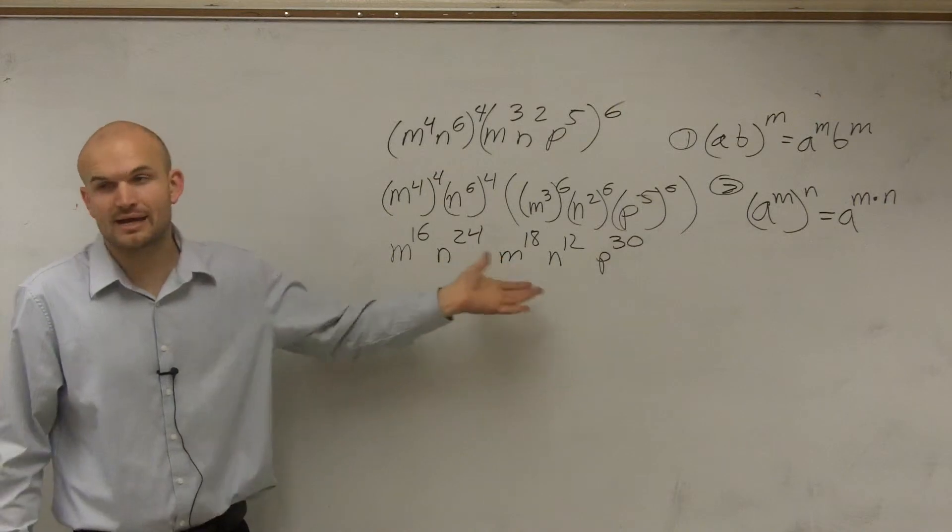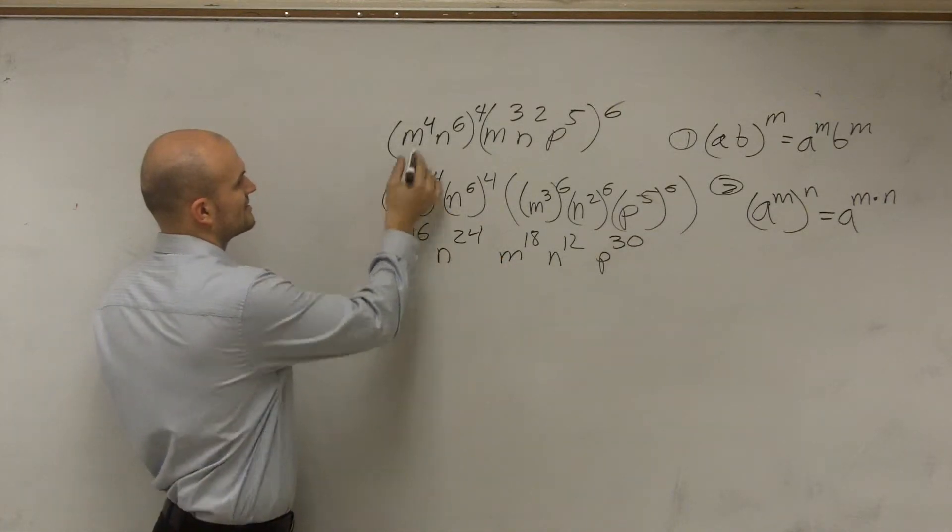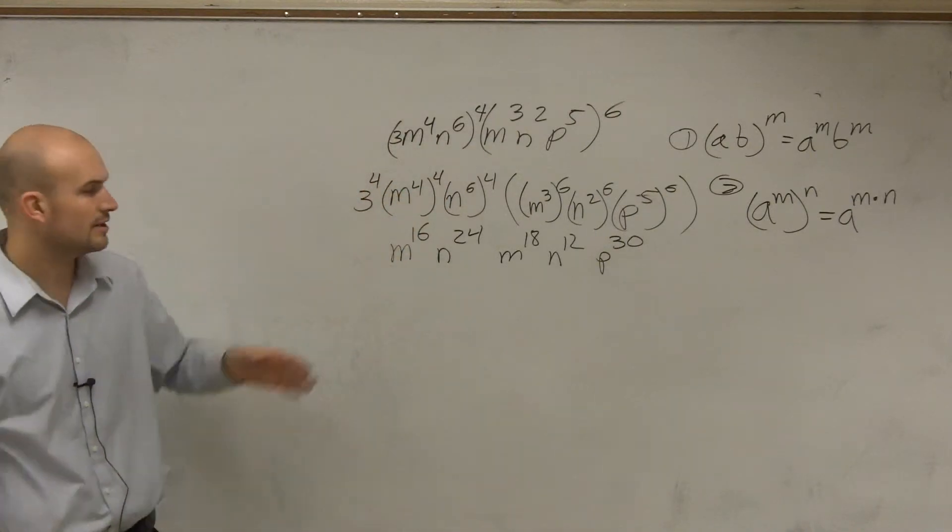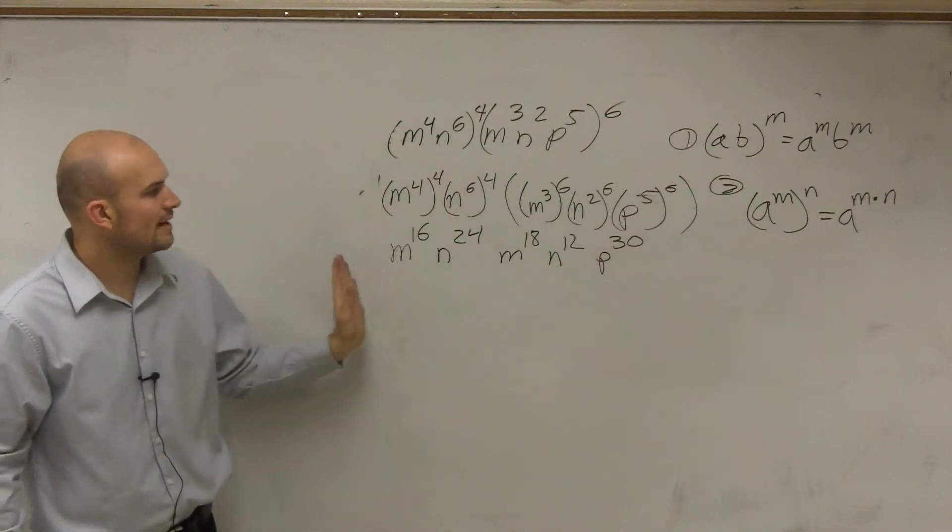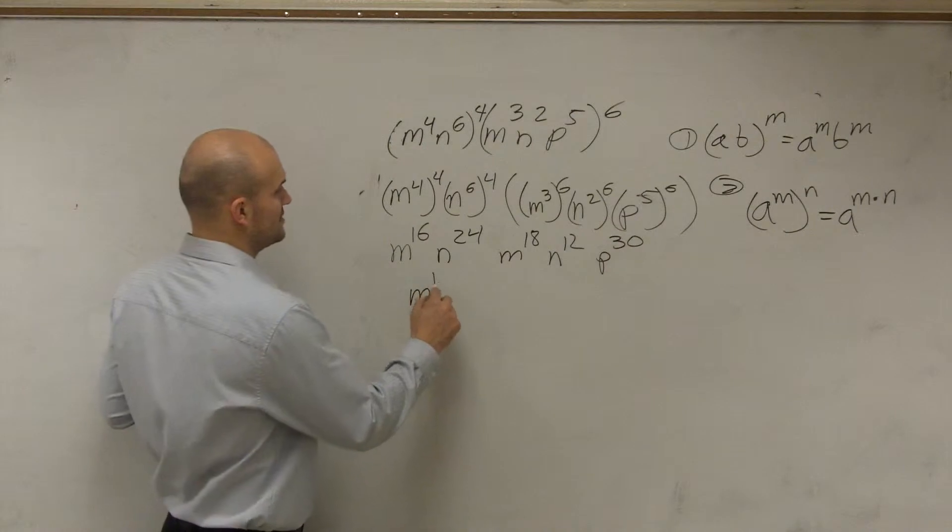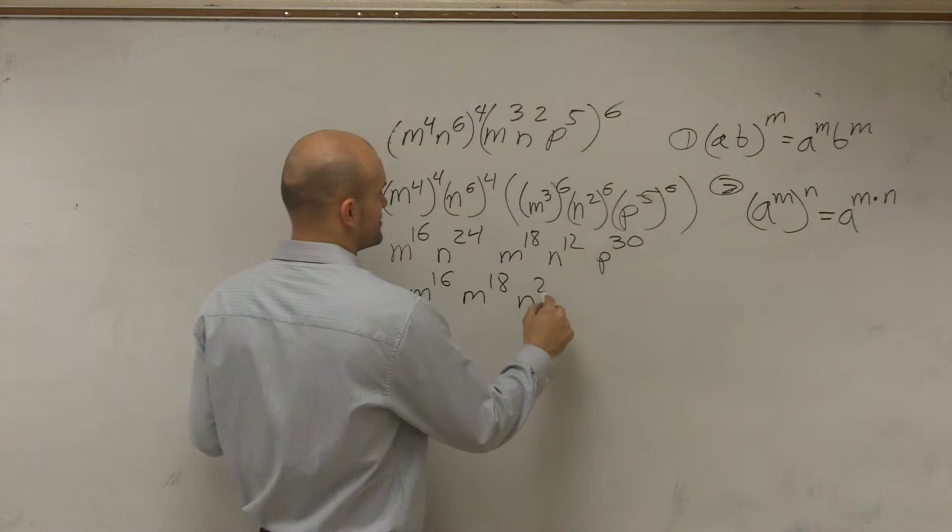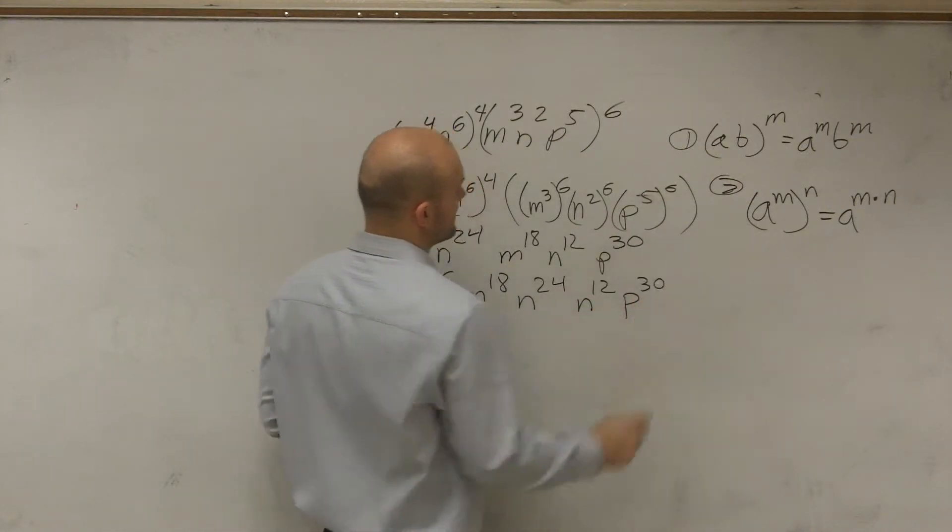And now I can combine. And yes, what Ken was talking about is like, let's say I had a 3 there. Well, then that would be 3 to the fourth power as well, right? But unfortunately, in this problem, we don't have a 3 there. So now let's just get our like terms next to each other. So I have m to the 16th times m to the 18th times n to the 24th, n to the 12th, and p to the 30th.